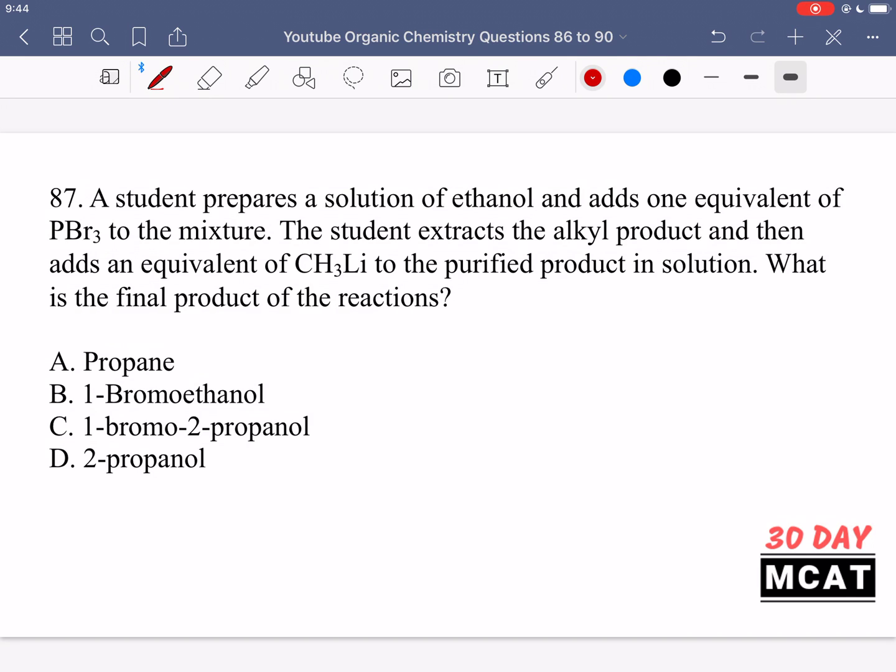In question 87, a student prepares a solution of ethanol and adds one equivalent of PBr3 to the mixture. The student extracts the alkyl product and then adds an equivalent of CH3Li to the purified product in solution. What is the final product of the reactions? So we had two reactions which took place. The first is the student reacted ethanol with PBr3, and you should know that when you take an alcohol and react it with this organic chemistry reagent PBr3, you get replacement of that OH group with a bromide. So we now have an alkyl bromide.